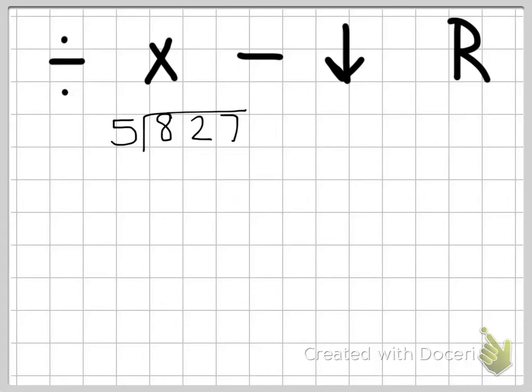This problem is 827 divided by five. I know that anytime I multiply by five, I'm going to get a number that either ends with zero or ends with five. And 827 doesn't end with a zero or a five, so I know right away that my answer should have a remainder. First step: eight divided by five. Five goes into eight one time. Five times one is five. Subtract: eight minus five is three. Then bring down our two.